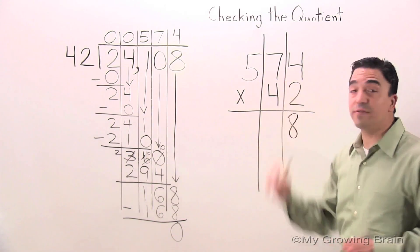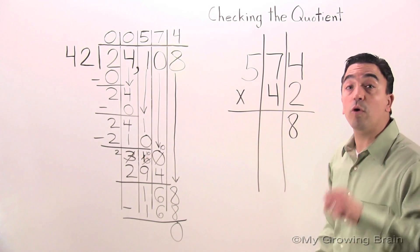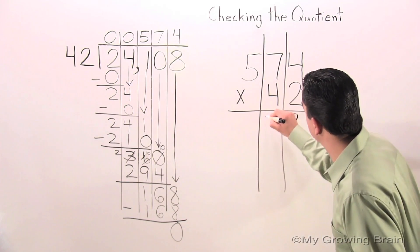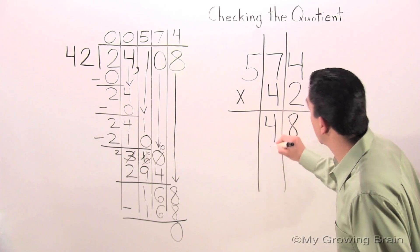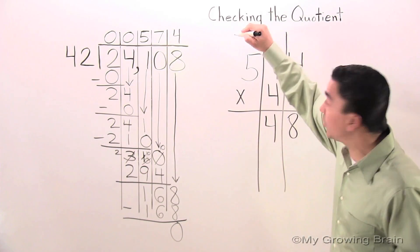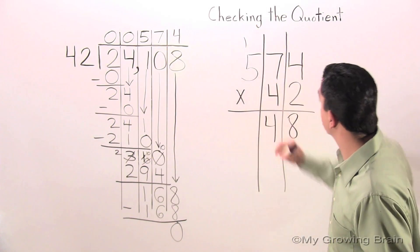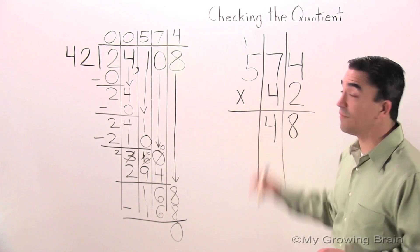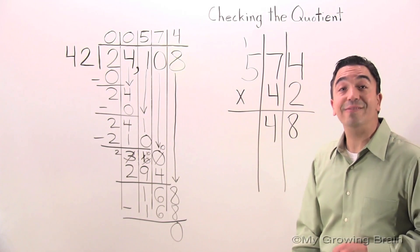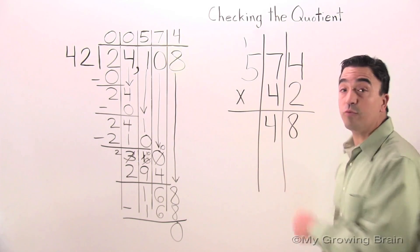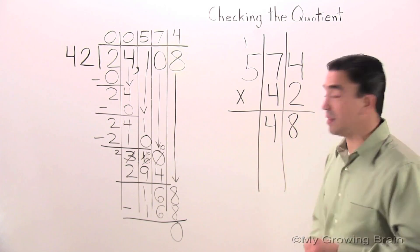2 times 7 is 14. Regroup the 1. 2 times 5 is 10, plus 1 is 11.